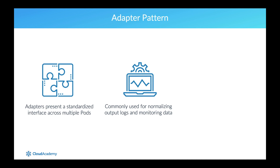The adapter pattern is commonly used for normalizing application logs or monitoring data, so they can easily be consumed by a shared aggregation system. The adapter may communicate with the primary container using either a shared volume when dealing with files, or over localhost, for example when getting metric data from a REST API.